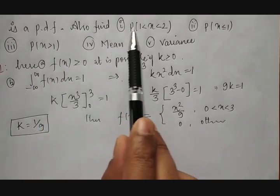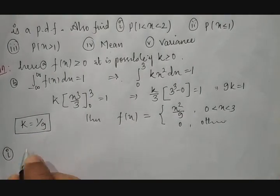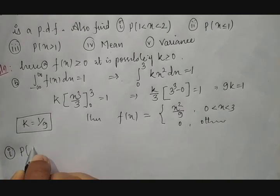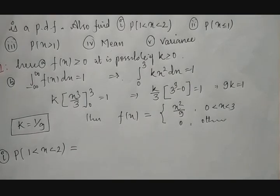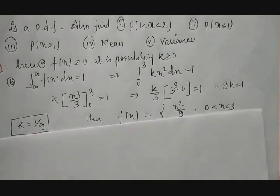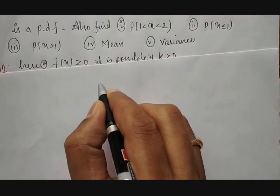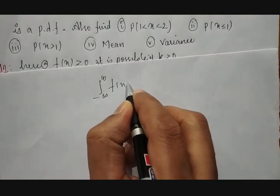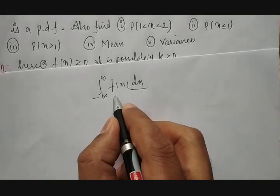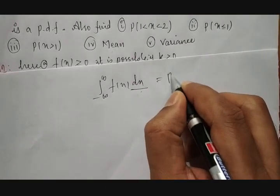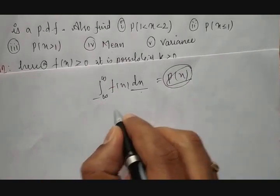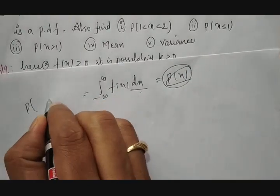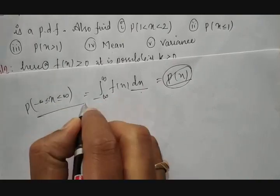Now let us calculate the remaining things. First, we need to calculate the probability that 1 < x < 2. Since the overall continuous probability is the integral from minus infinity to plus infinity of f(x) dx, the probability P(1 < x < 2) corresponds to the integral from 1 to 2 of f(x) dx.